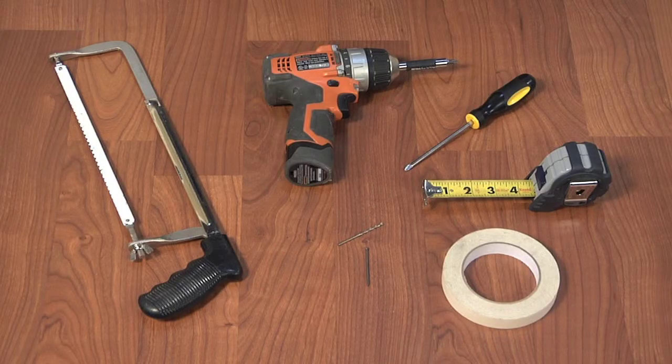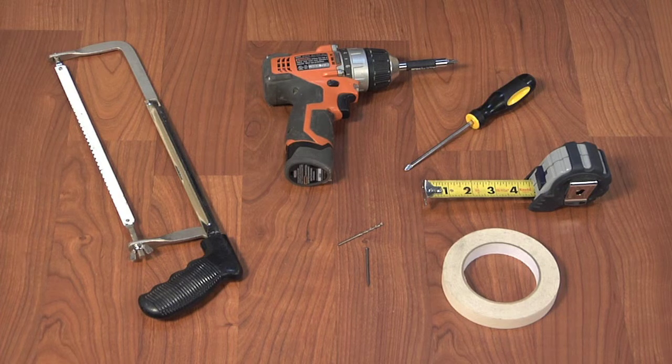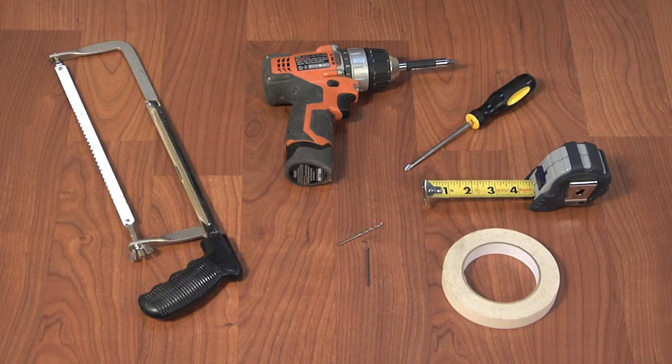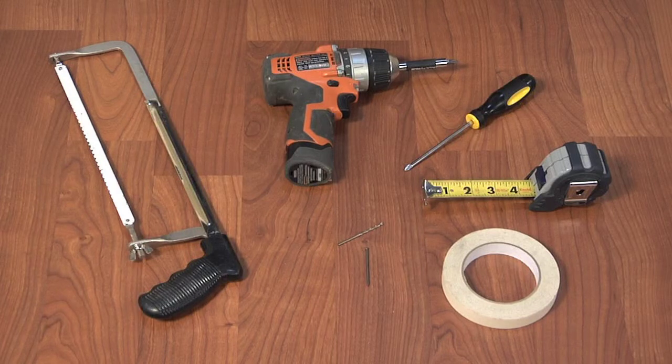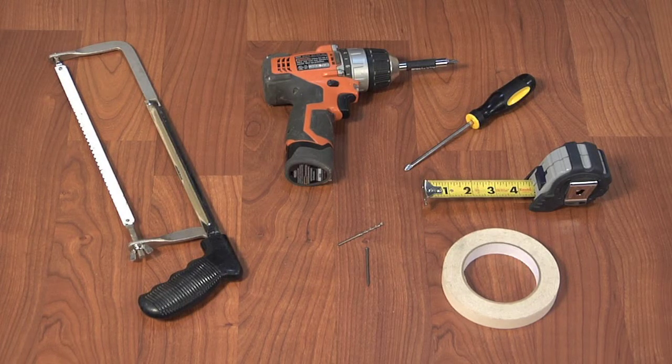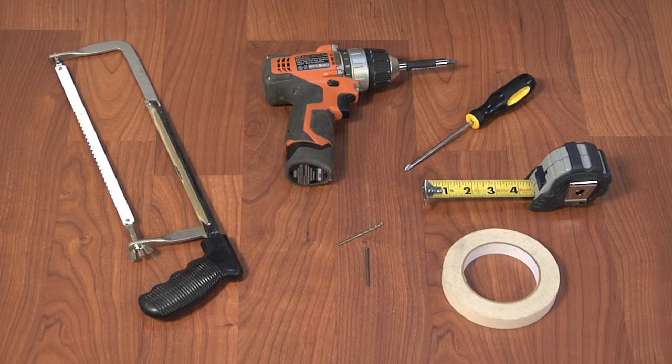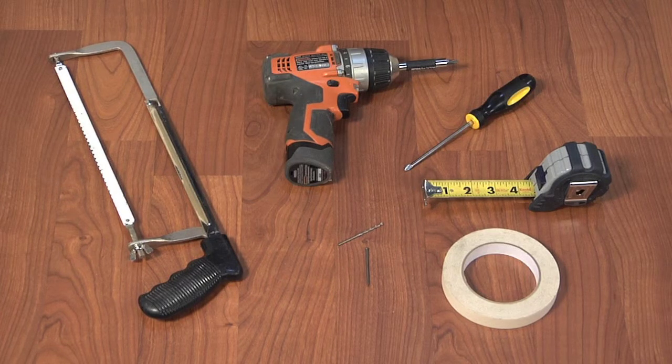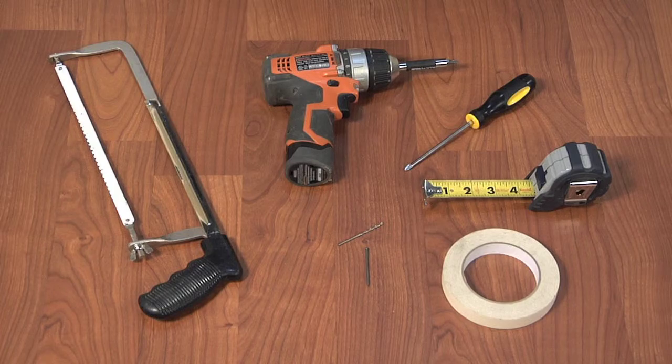The following are tools and items that are required or may be useful for the installation of your doors: fine-tooth hacksaw, drill, flathead screwdriver, five 64th-inch drill bit, tape measure, Phillips screwdriver, and masking tape, which is used only for trimming the height of the door.